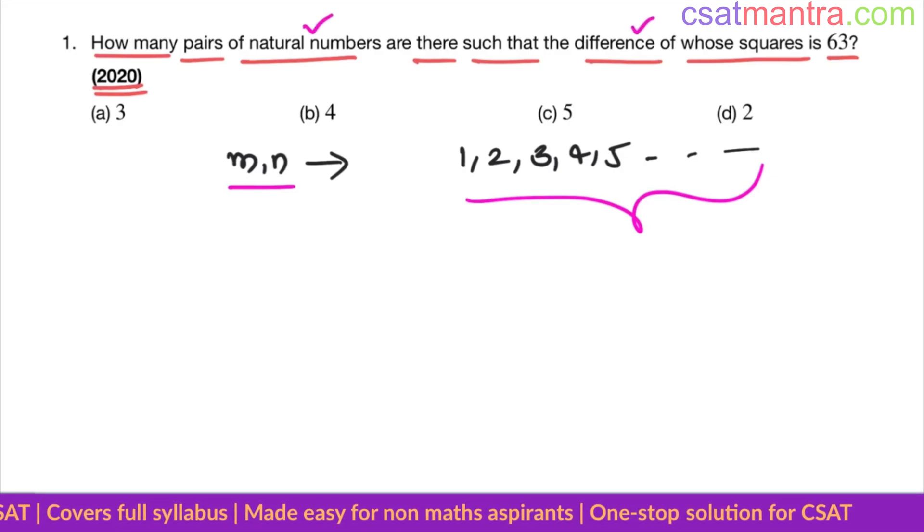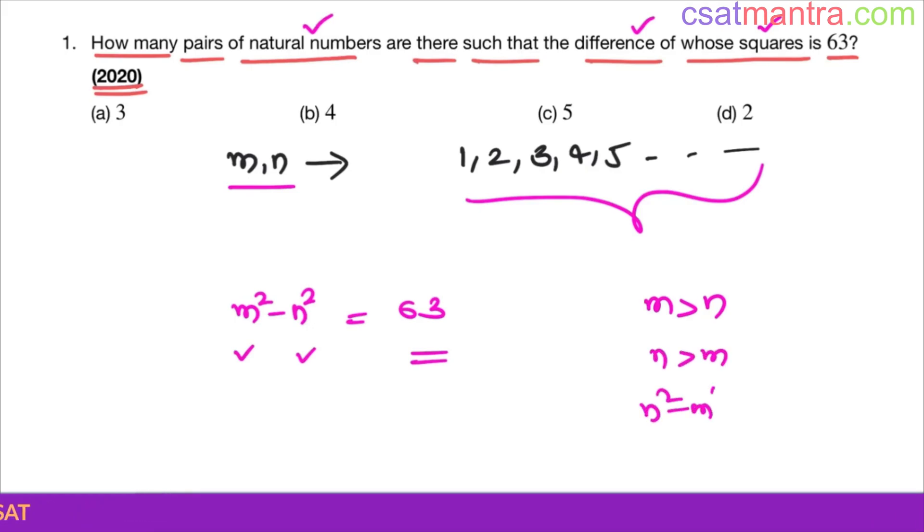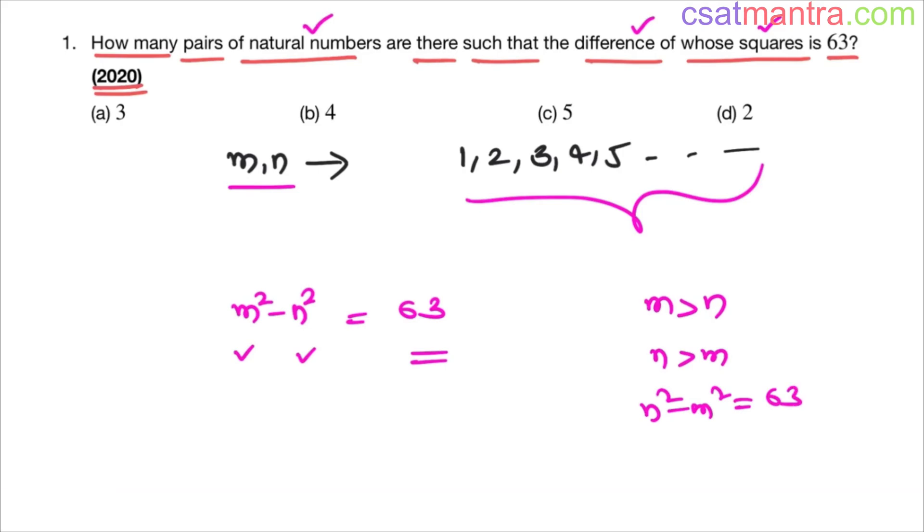Now the equation difference of whose squares, m square minus n square equals 63. m is greater than n, bigger number minus smaller number positive. I took m greater than n, you can take n greater than m, in that case n square minus m square equals 63. It doesn't make any difference.